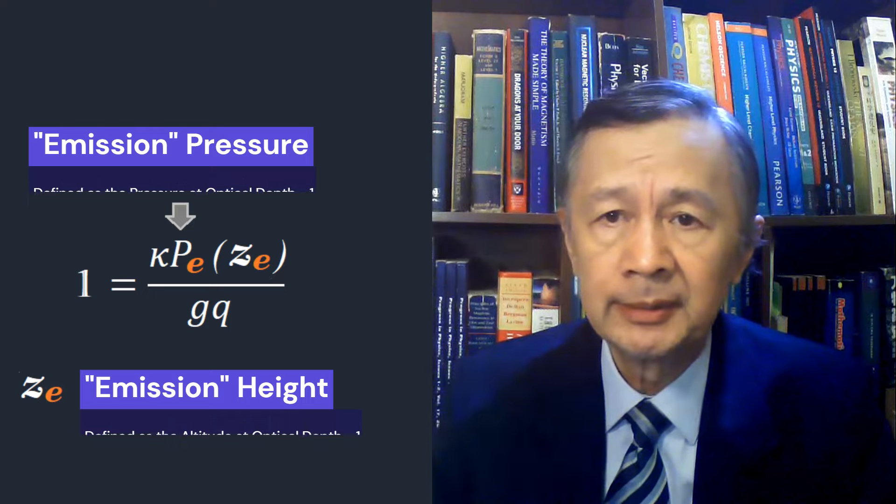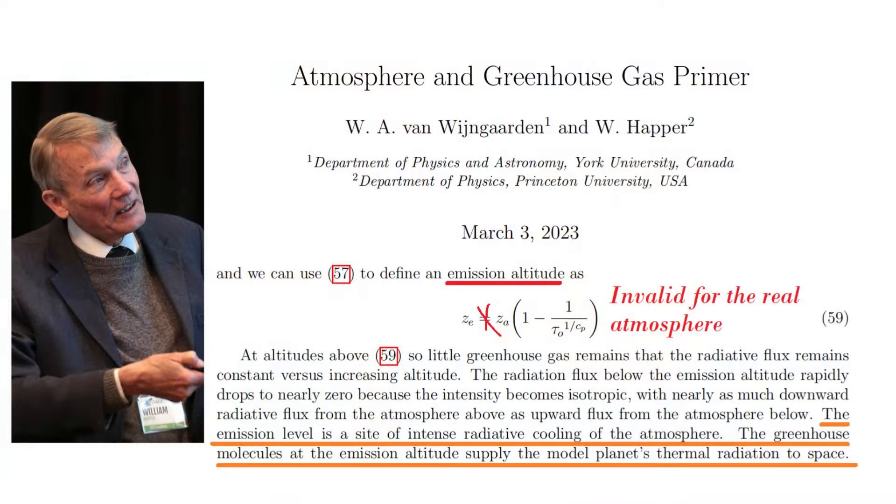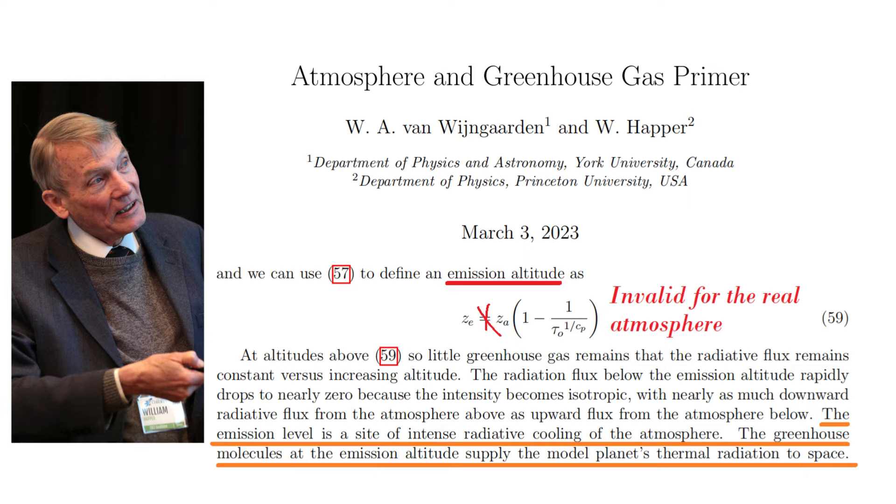For example, the two Williams told their readers, the emission level is the site of the intense radiative cooling of the atmosphere. The greenhouse molecules at the emission altitude supply the model planet's thermal radiation to space. But is this true?